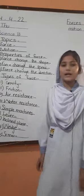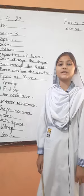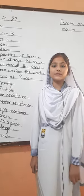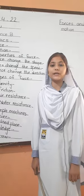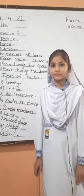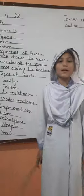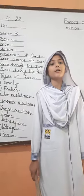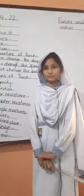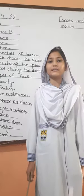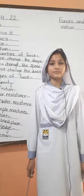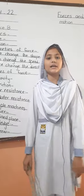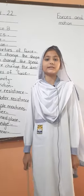Inclined plane. An inclined plane is a flat surface that goes from a lower level to a higher level. For example, ramps are a form of inclined plane. Wedge. A wedge is two inclined planes joined at a pointed edge, used to split or cut apart objects. An axe head is a wedge. Screw. The screw works like an inclined plane and is used to hold objects in place. Thank you.